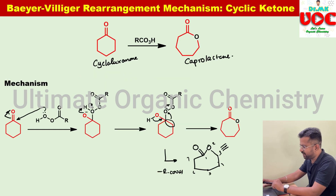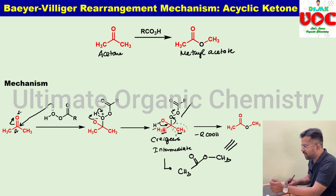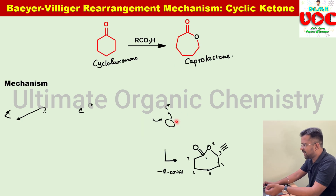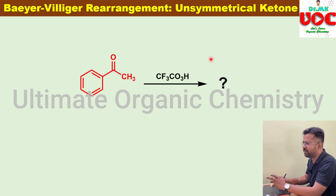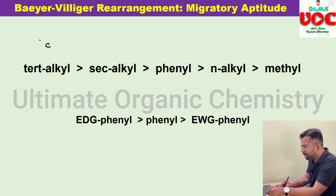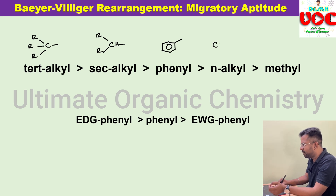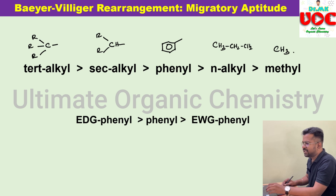Suppose you have an unsymmetrical ketone. In the previous case of acetone, both groups are methyl, so any one methyl group can undergo migration and you get the same product. But if you have an unsymmetrical ketone, you must know the migratory aptitude. The order is: tertiary alkyl > secondary alkyl > phenyl > n-alkyl (primary, e.g., ethyl, propyl, butyl) > methyl group.